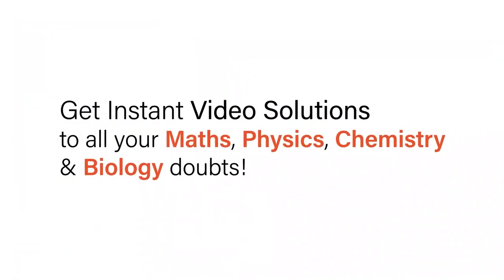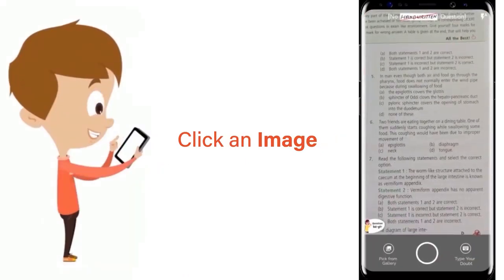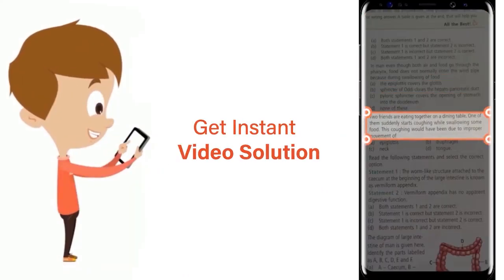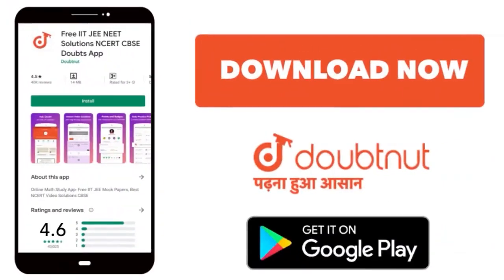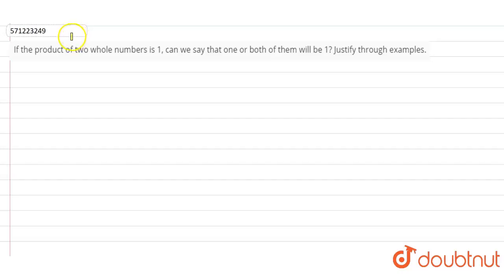With Doubtnut, get instant video solutions to all your maths, physics, chemistry, and biology doubts. Just click the image of the question, crop the question, and get instant video solution. Download Doubtnut app today. Hi students, the question is: if the product of two whole numbers is one...